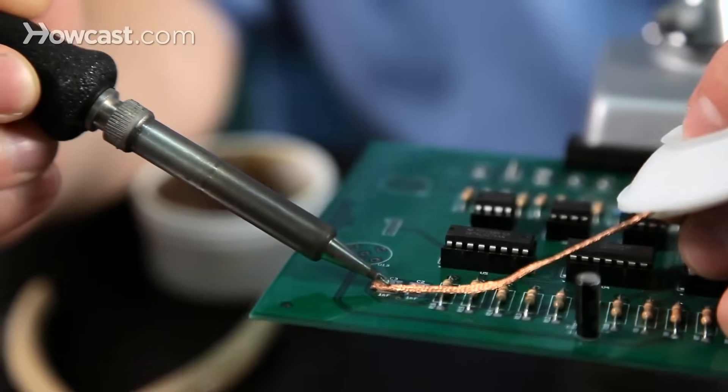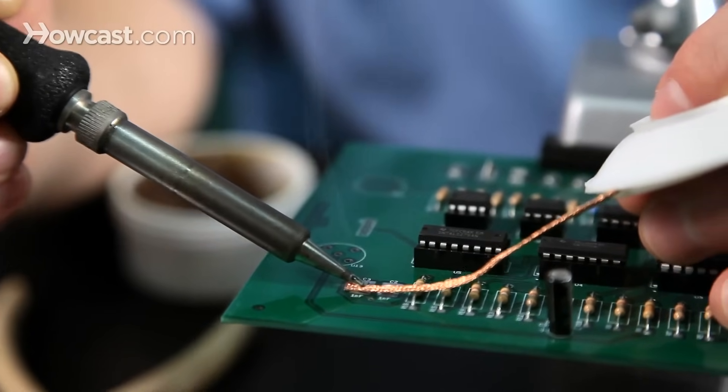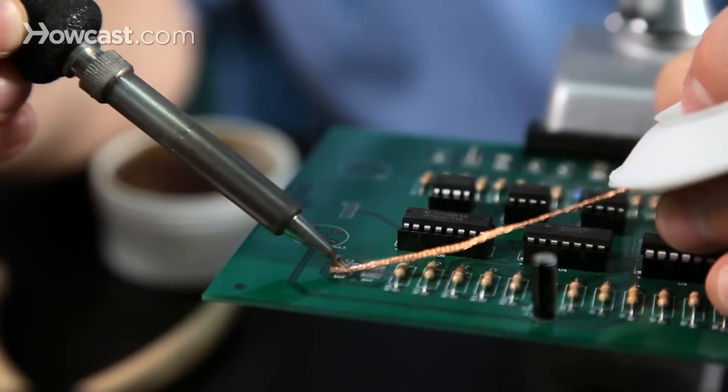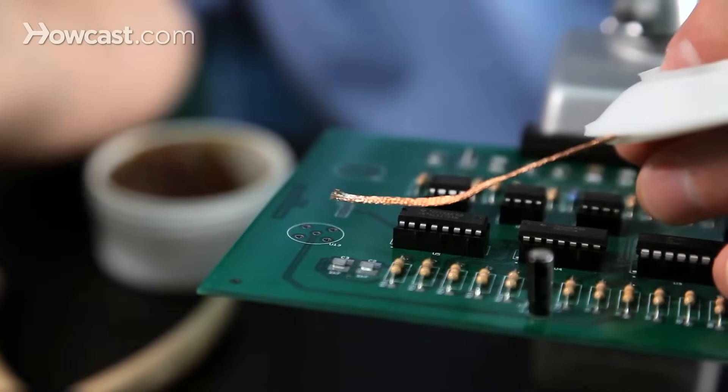We apply the solder wick between the part that we want to use and the iron, and place our iron on top of the wick so that the wick is heated. As you can see, the solder flows into the wick.